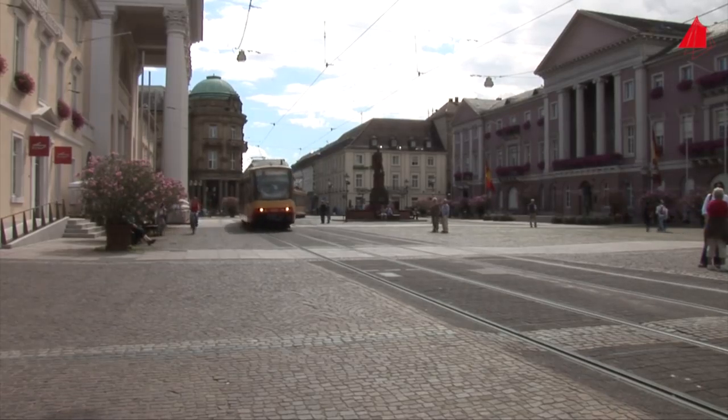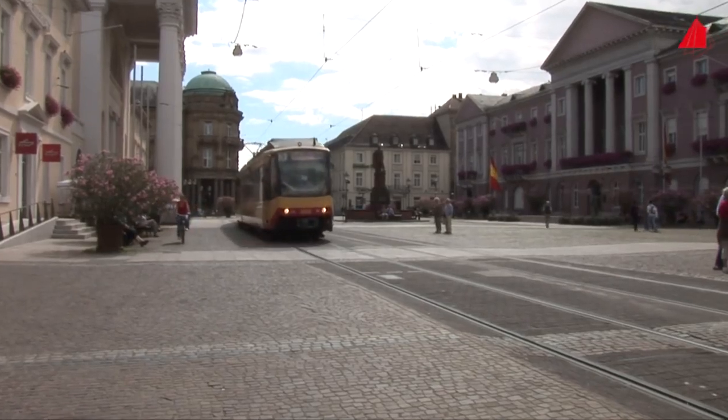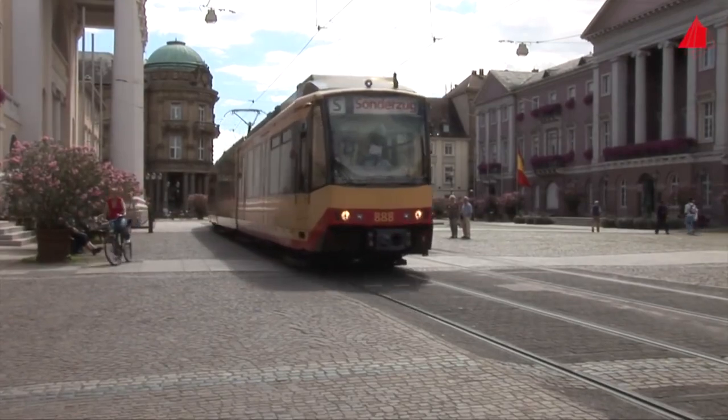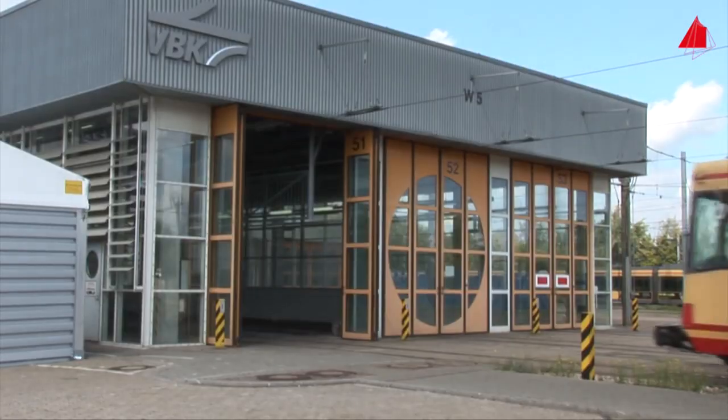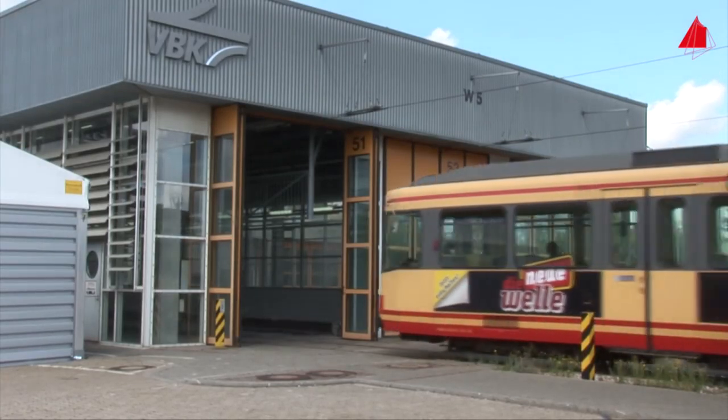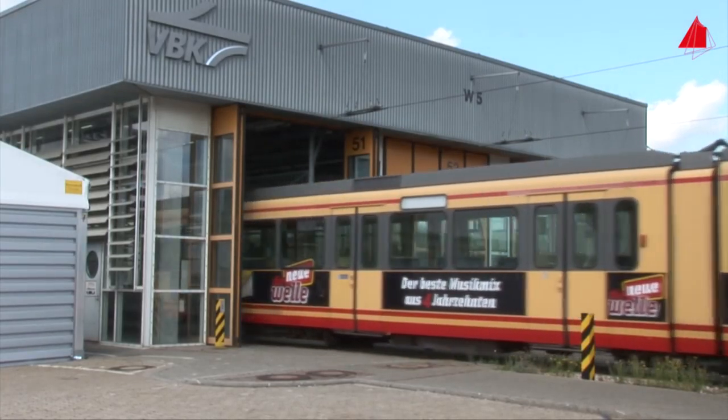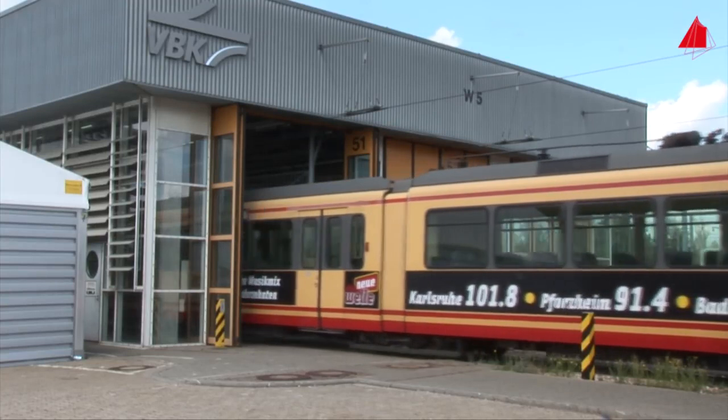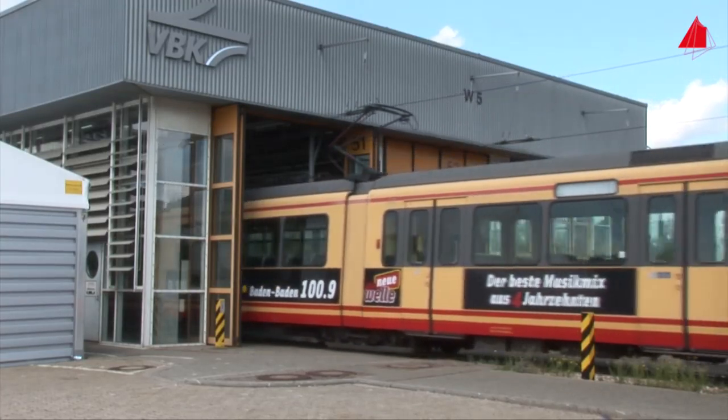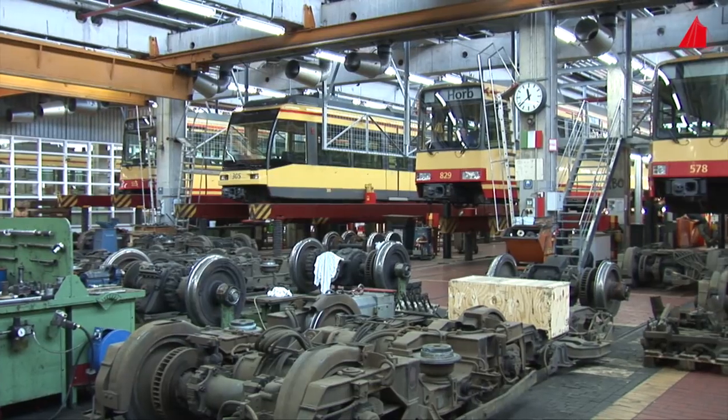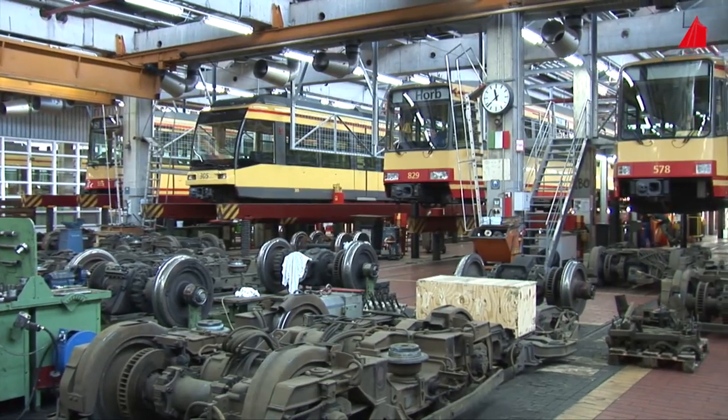Trams are popular means of transport in Karlsruhe in southern Germany. The tram cars are not only cleaned regularly but also tested thoroughly in regular intervals by the transport company. Among many other maintenance points, the ultrasonic examination of the wheel axles plays an important role. A tram enters the maintenance hall for inspection.